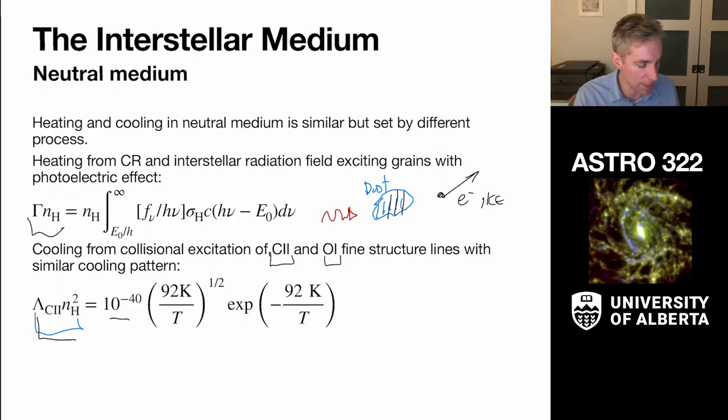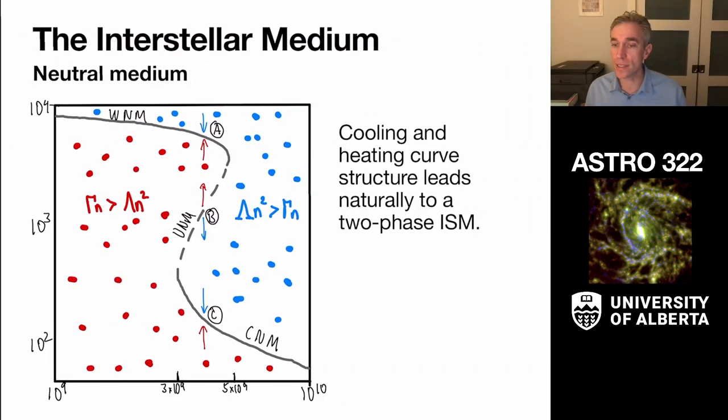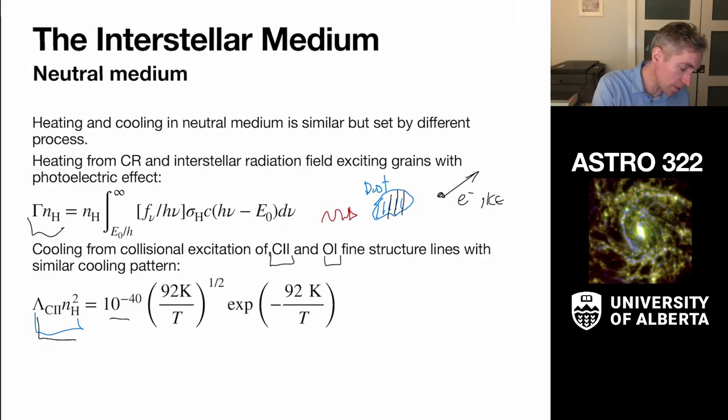So what is neat is that we can take these heating and these cooling rates and figure out the possible temperatures of the interstellar medium. And the thing I want to sort of point out is that if we work this out,